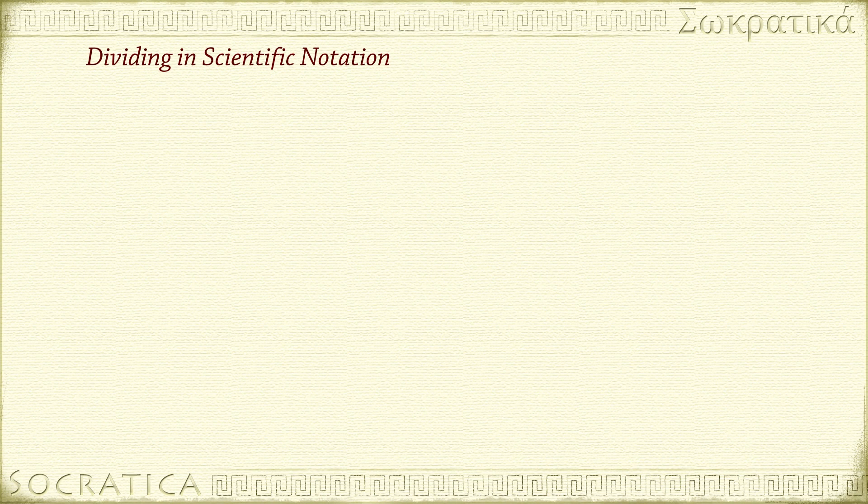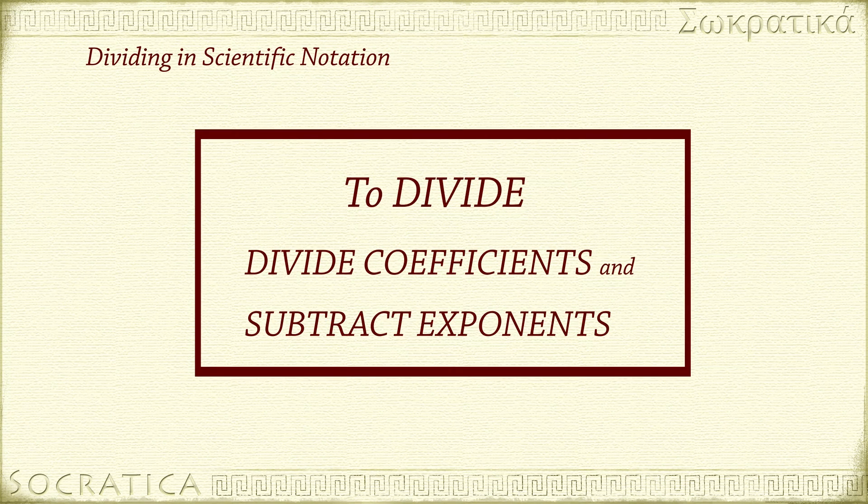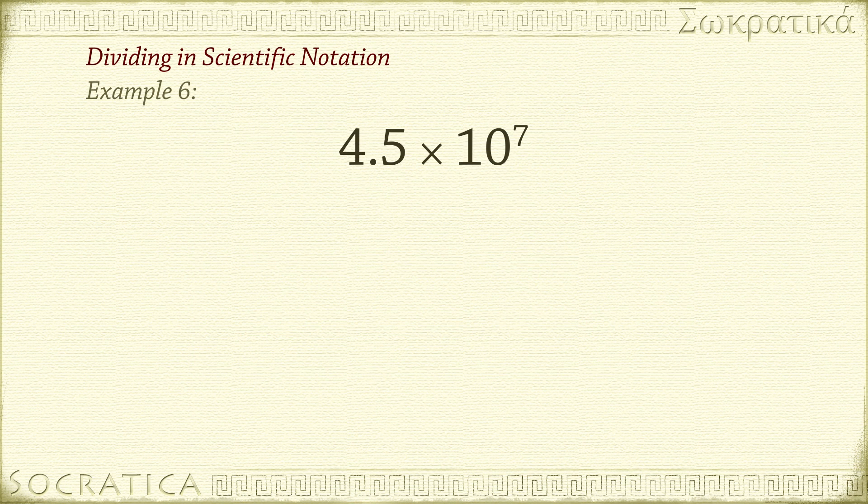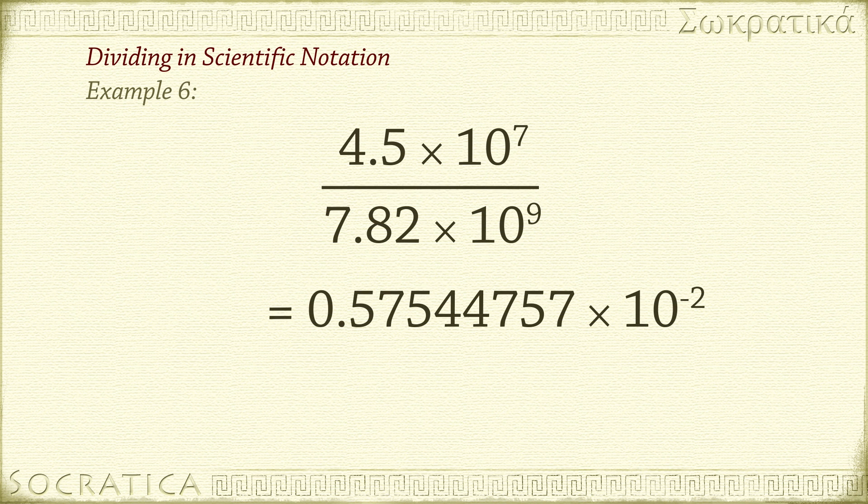To divide two numbers in scientific notation, you divide the coefficients and subtract the exponents. Round your final answer to the number of significant figures in the coefficient with the smallest number of significant figures. 4.5 times 10 to the negative 7 divided by 7.82 times 10 to the negative 9 equals 0.57544757 times 10 to the negative 2. Round to two sig figs: 5.8 times 10 to the negative 3.